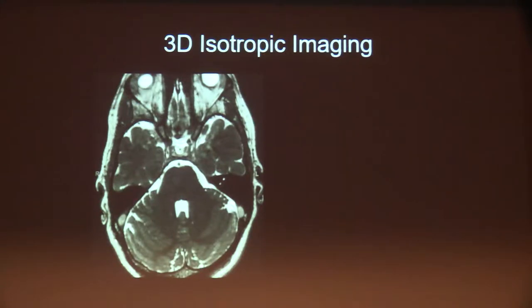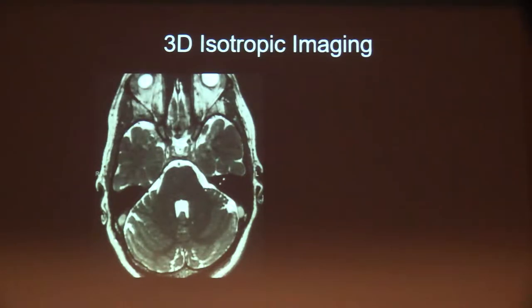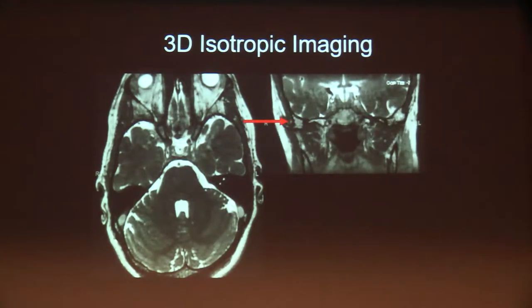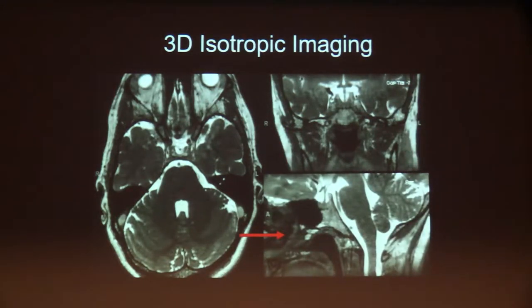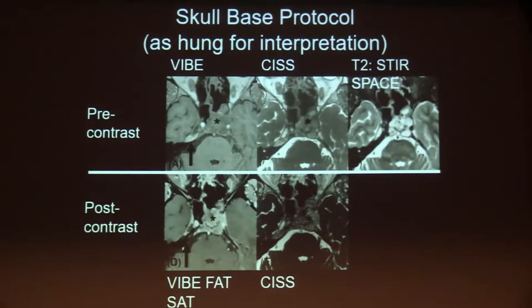This is the protocol we're using at Johns Hopkins. We use essentially exclusively 3D high-resolution imaging with multiple different sequences. We're using 3D isotropic imaging, which we acquire during the entirety of the sequence acquisition, and then post-hoc we're able to take the 3D slab and reconstruct the imaging in the coronal and sagittal planes from a single acquisition. We've shifted from 2D to 3D imaging for this application.